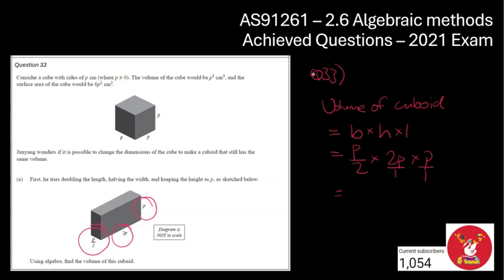So top times top times top, that's going to be 2p cubed. And then I'm going to multiply all the bottoms together to get to 2, and then 2s cancel, leaving me with p cubed. So the volume of this cuboid is actually the same as the volume of the cube that we had earlier.